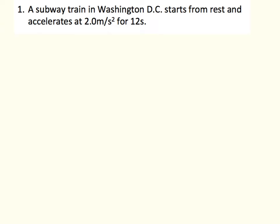In this first question, a subway train starts from rest and accelerates at 2 meters per second squared for 12 seconds. Things I notice: it starts from rest, it's accelerating at a constant rate, and I'm given a time frame of 12 seconds. The first thing I would do is record the things I'm given, starting by drawing an acceleration versus time graph.